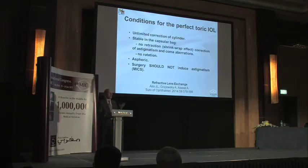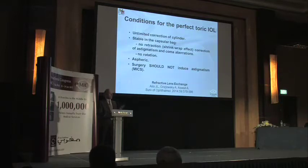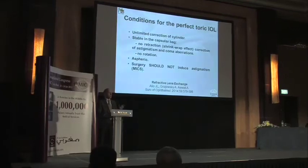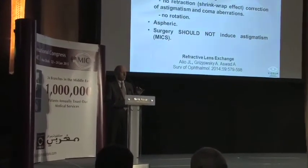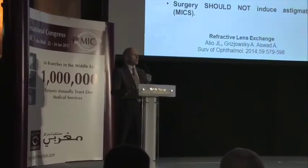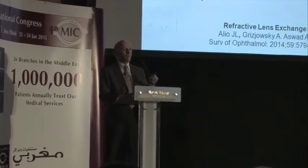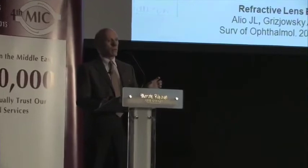An ideal toric lens should offer unlimited cylinder correction, remain stable in the capsular bag without rotating intraoperatively, provide access to appropriate asphericity, and your surgery should be astigmatically neutral. The smaller the incision, the better. You must work in a very controlled incisional environment.